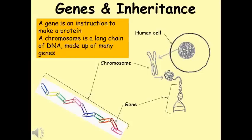If we looked inside the nucleus of a human cell, we'd see 46 little packets of DNA. These are called chromosomes. In fact, we're actually looking at 23 pairs of chromosomes, with a copy of each inherited from each parent.